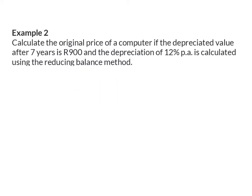Example 2. Calculate the original price of a computer, if the depreciated value after seven years is 900 Rand, and the depreciation of 12% per annum is calculated using the reducing balance method. Here we are given that it is seven years, so that will be our N value, our number of periods. After the seven years, the value will be 900 Rand, so that is our final value, our A value. The depreciation is 12%, which will be our I value, and that is calculated using the reducing balance method, which tells us which formula we are going to use.